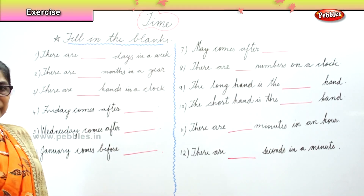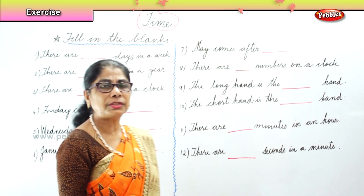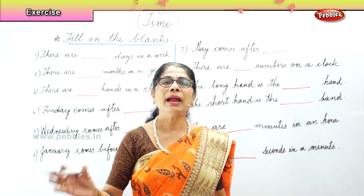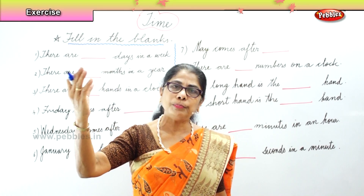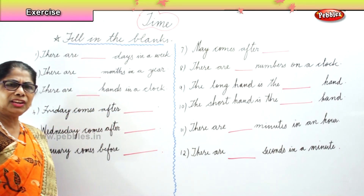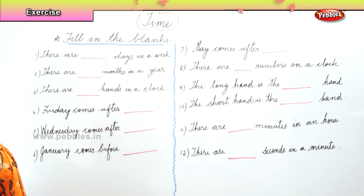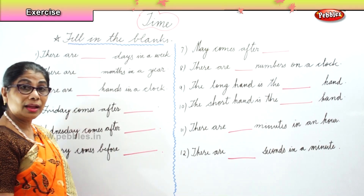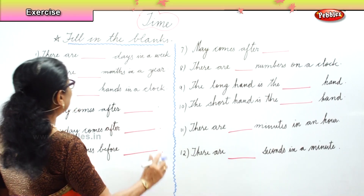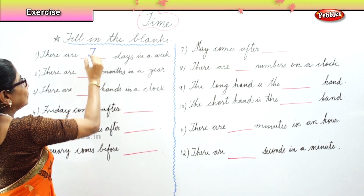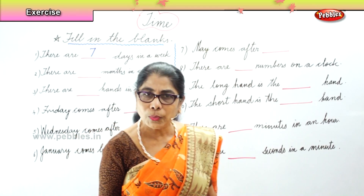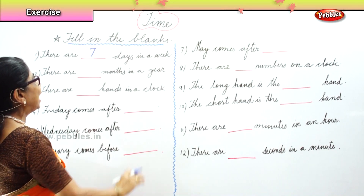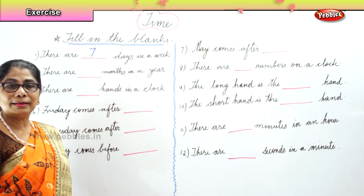We are doing fill-ups, having learned how many minutes in one hour, how many days there are, and which days come before or after. Now, there are dash days in a week — how many days in a week? Good — there are seven days in a week. And there are dash months in a year — how many months? Good — there are twelve months in a year.